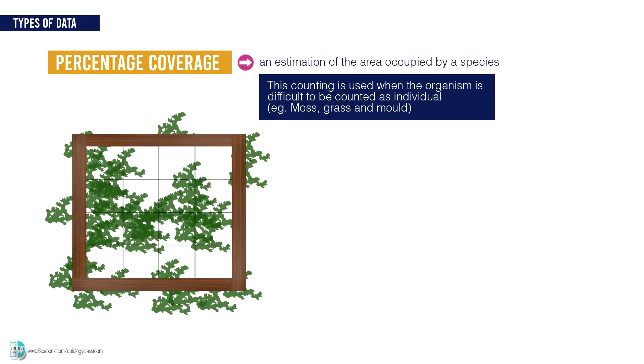To calculate the percentage of coverage, you need to find out the number of squares which is occupied by a species divided by the total number of small squares in a quadrat. Then multiply it with 100%.